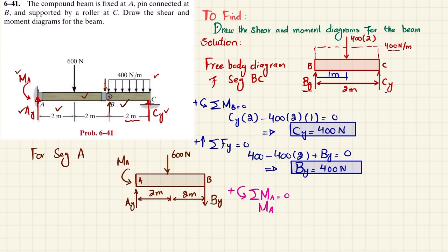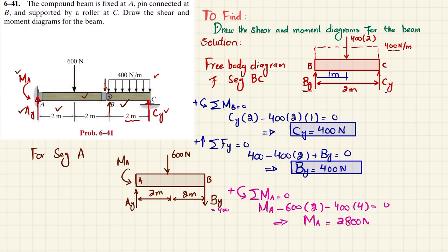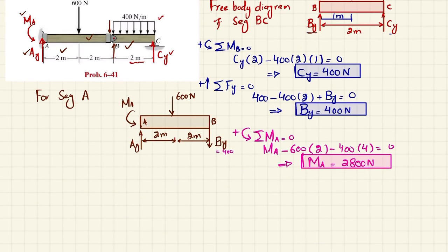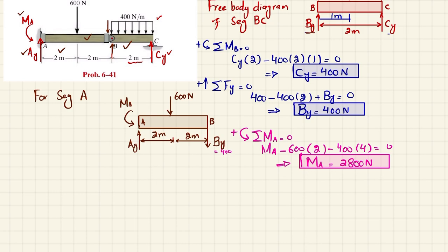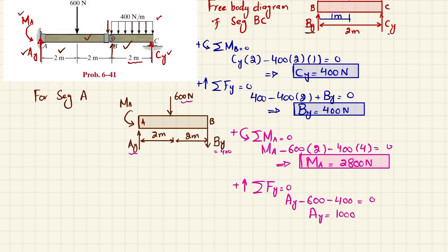Solving the moment equation: MA minus 600 times 2 minus 400 times 4 equals zero, so MA equals 2800 Newton-meters. Using the sum of forces in the Y direction equal to zero: AY minus 600 minus BY equals zero. With BY equal to 400, AY equals 1000 Newton.